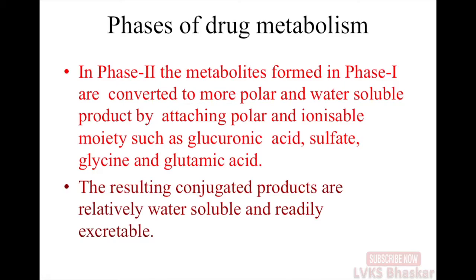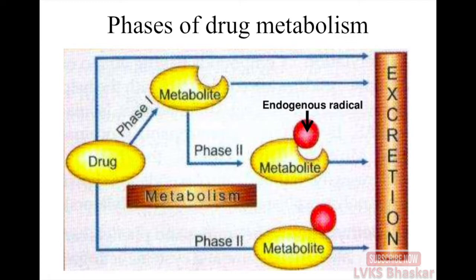In phase 2, the metabolites formed in phase 1 are converted to more polar and water-soluble products by attaching a polar and ionizable moiety such as glucuronic acid, sulfate, glycine, and glutamic acid. The resulting conjugated products are relatively water-soluble and readily excretable. This picture shows the phase 1 and phase 2 metabolism — the drug in phase 1 will be converted to a somewhat polar form, and then in phase 2 it is further converted into a more water-soluble and easily excretable substance.